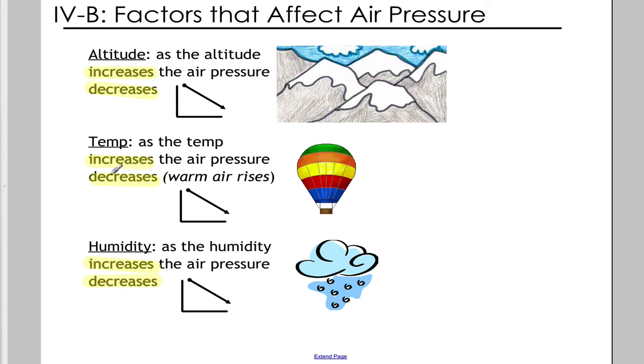That air pressure can change based on a couple of factors: altitude, like we just saw; temperature, as the temperature of the earth increases, the air becomes less dense and begins to rise like a hot air balloon. That less dense air rising pushes down on the ground with less force and gives you less pressure. Humidity—as it increases, the air pressure also decreases. Every water molecule replaces an air molecule...